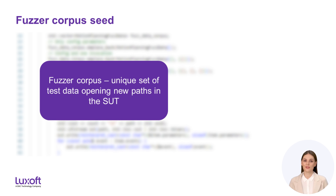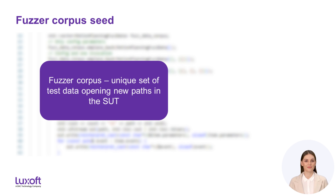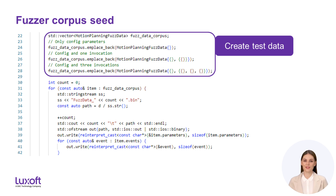Fuzzers generate a lot of randomized data — most of the generated data will not lead to discovery of new behaviors of the software under test. Whenever test data leads to discovery of a new code path, the fuzzer stores it in a dataset called the fuzzer corpus. This way it would not need to start from scratch after being interrupted. To help the fuzzer find relevant data faster, it is recommended to seed the fuzz corpus with initial data. As the motion planning component does not have its own file format, we can write a small program to serialize several sample data structures to disk to serve as a fuzzing corpus seed.